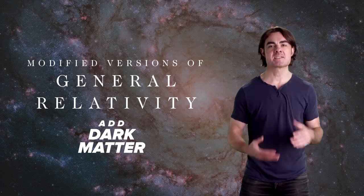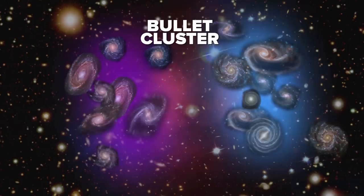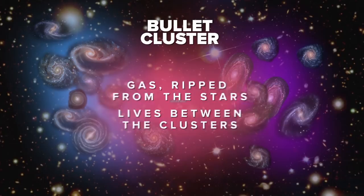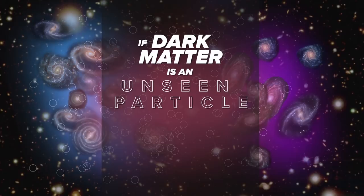But there's an even bigger nail in the coffin of modified gravity. Say hello to the bullet cluster. It's actually two clusters that smashed right through each other. The gas was ripped away from the stars and now lives between the clusters. In the bullet cluster, most of the mass actually is in the gas. So if dark matter really comes from weirdly behaving gravity, then the cluster's gravity should stay concentrated on the gas. But if dark matter is an unseen particle, and it's the type of particle we think it might be, then that dark matter should pass right on through, just like the stars.